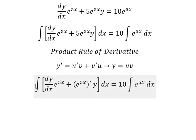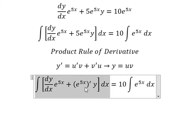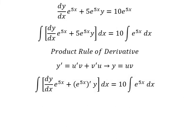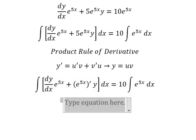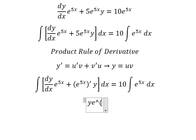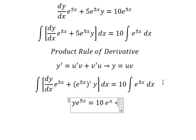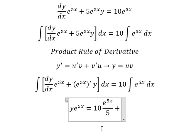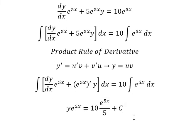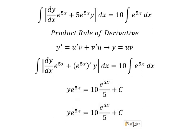So the integral of this gives us y·e to the power of 5x. This side gives us e to the power of 5x over 5, plus C. 10 divided by 5 gives us number 2.